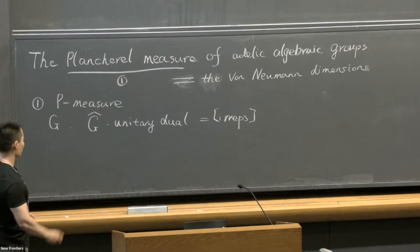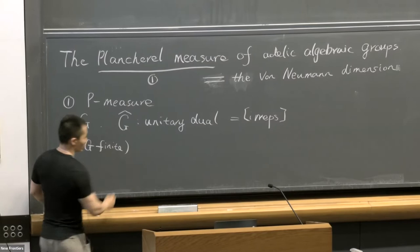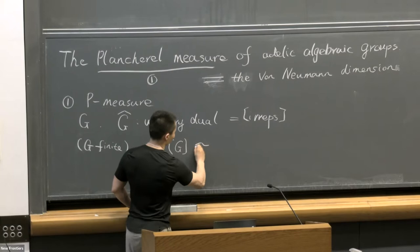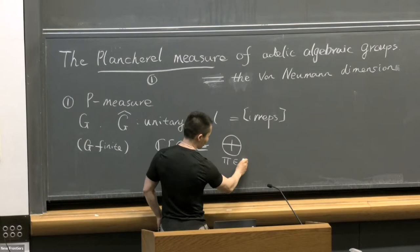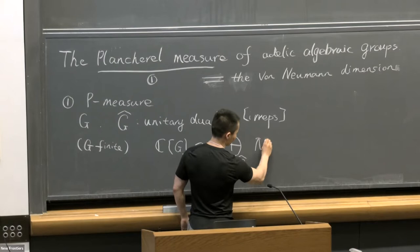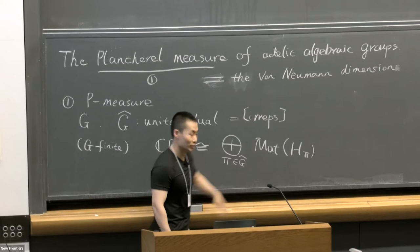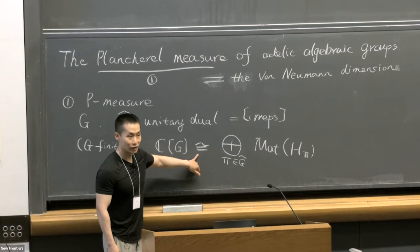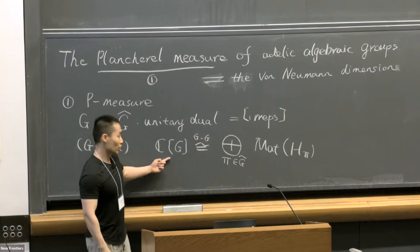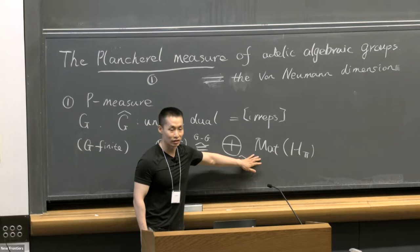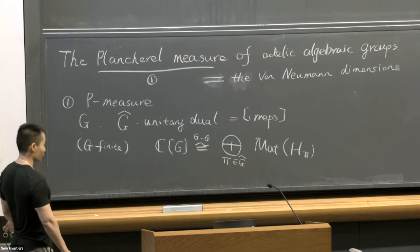Let's consider an easy example. When G is abelian and finite, there's a well-known result: the group algebra of G is isomorphic to the direct sum over pi in G hat of matrix algebras over H_pi, where H_pi is the underlying Hilbert space. This is not just an isomorphism of vector spaces—it's a G-G bimodule isomorphism.